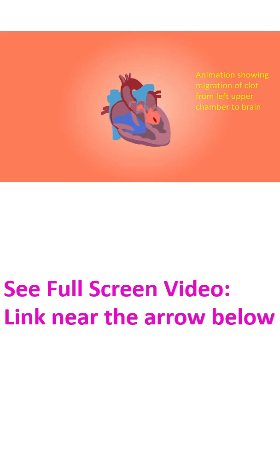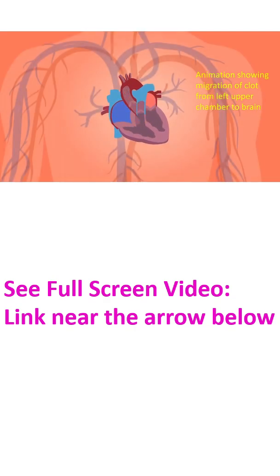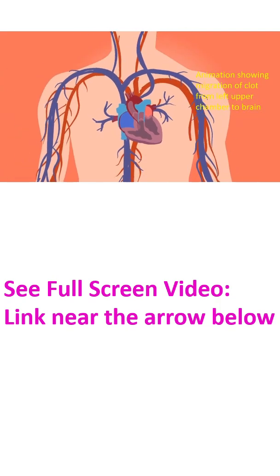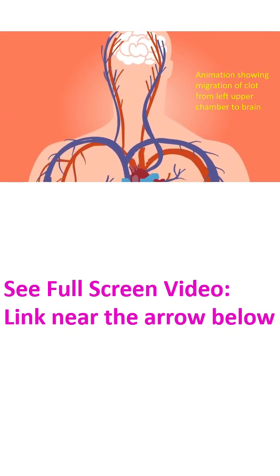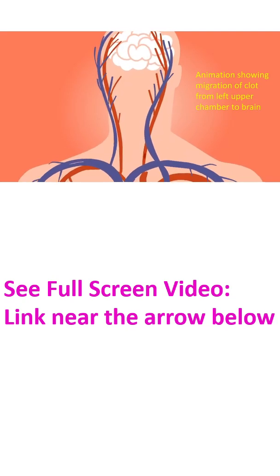Part of this clot can break away and move into the blood circulation. The clot travels along the blood vessels and may block any one of them. If a blood vessel of the brain is blocked, it results in weakness of a side known as stroke.